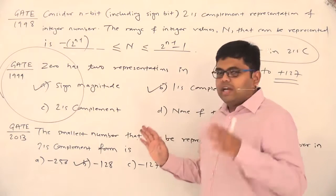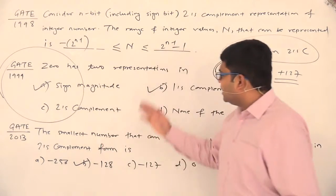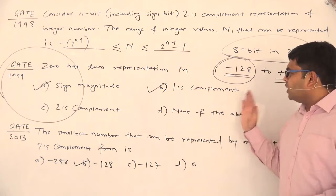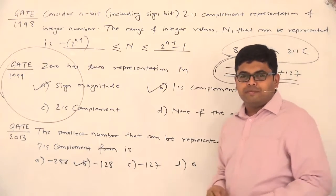So, anyways, you need not be worried. Right now, you should keep only one thing in mind that 0 has got two representations in sign magnitude as well as one's complement and as far as this question is concerned, both the options are correct and both of them need to be marked.